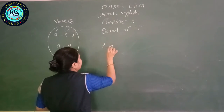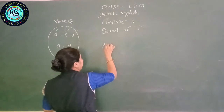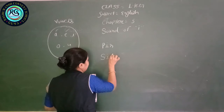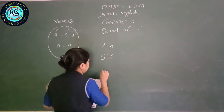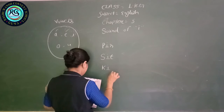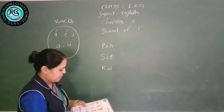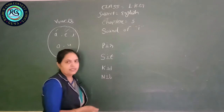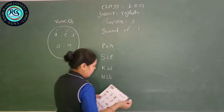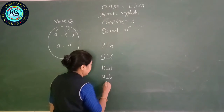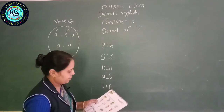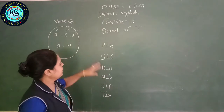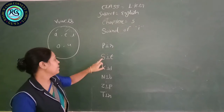K, I, T — Kid. And I, T. V — new. Z, I, P — Zip. T, I, N — Tin.